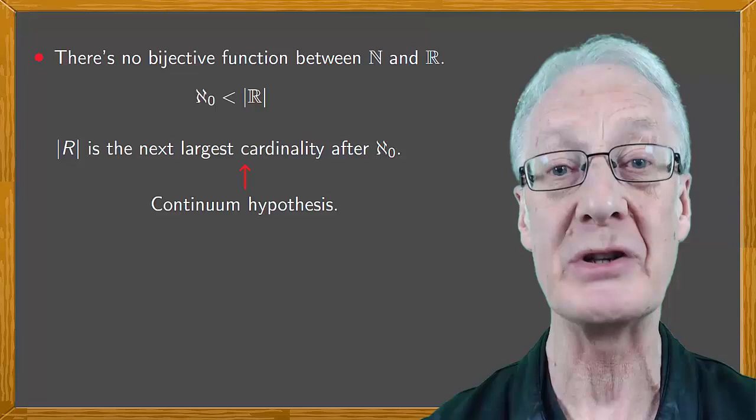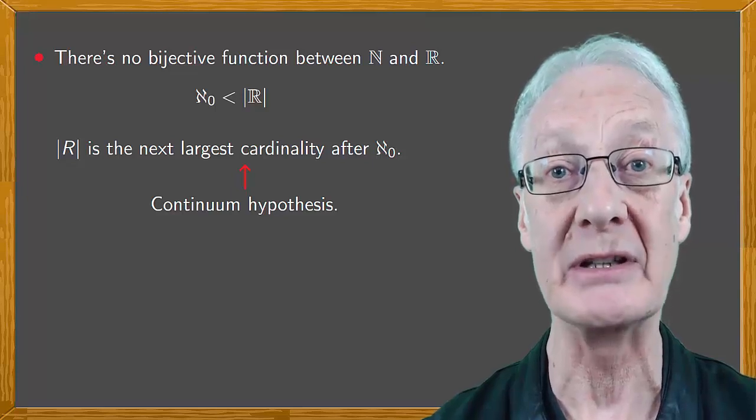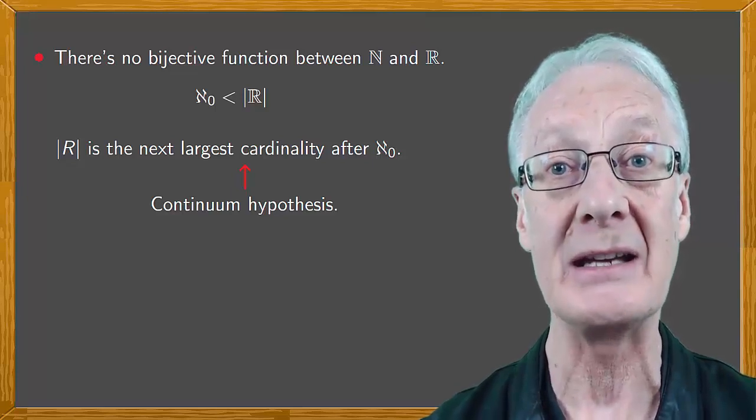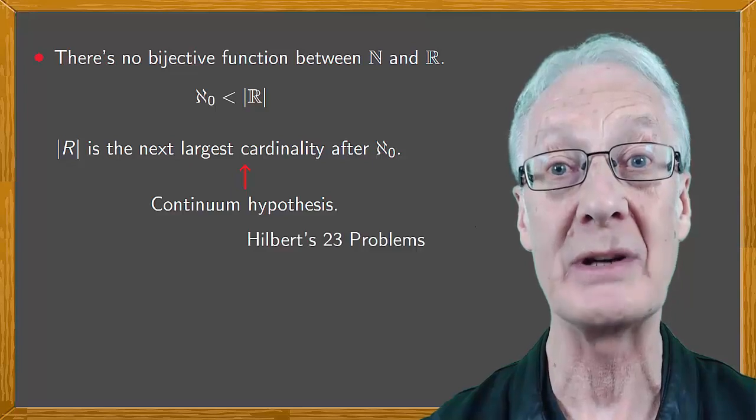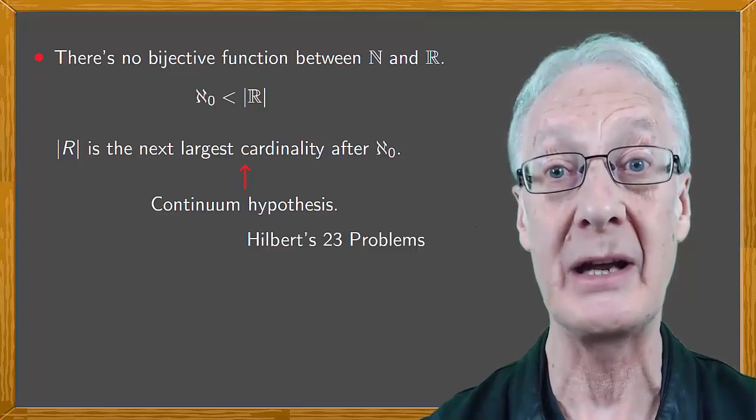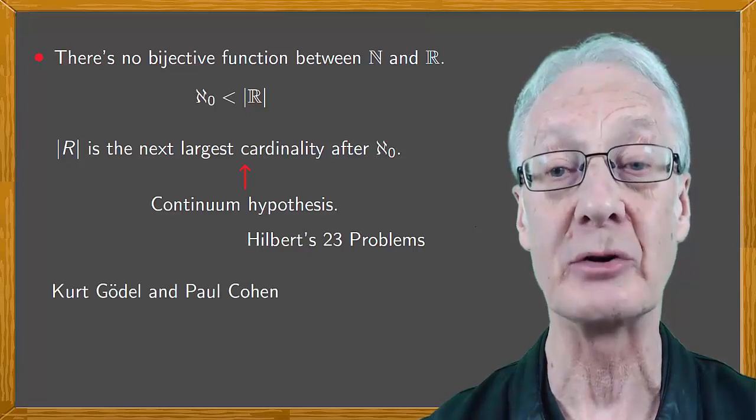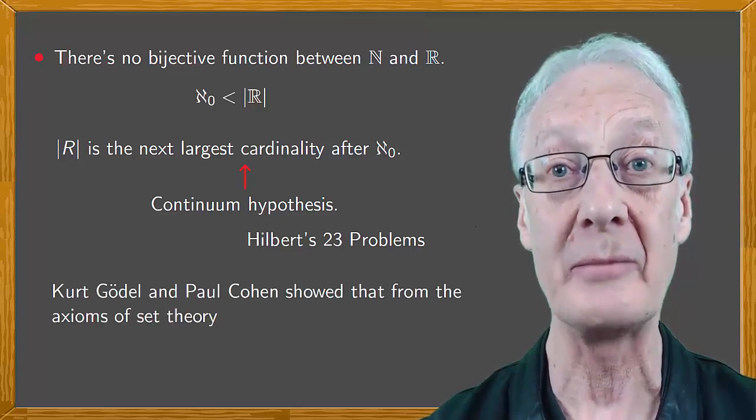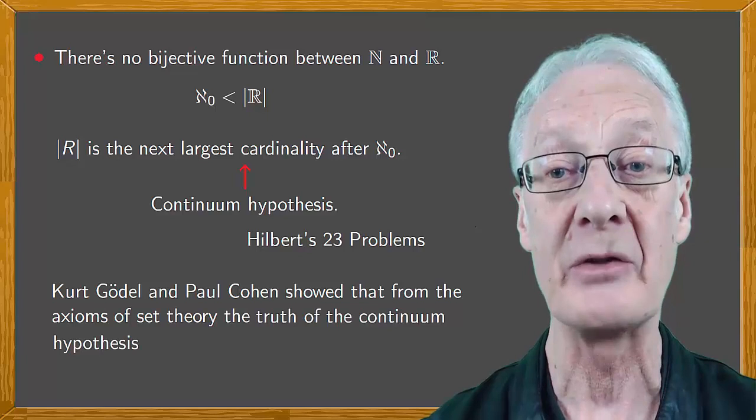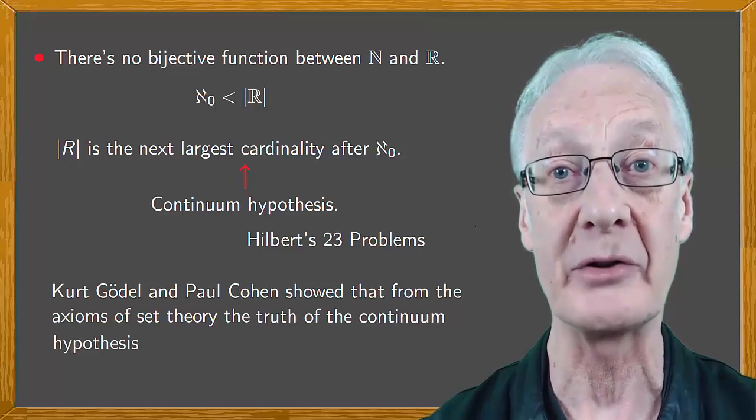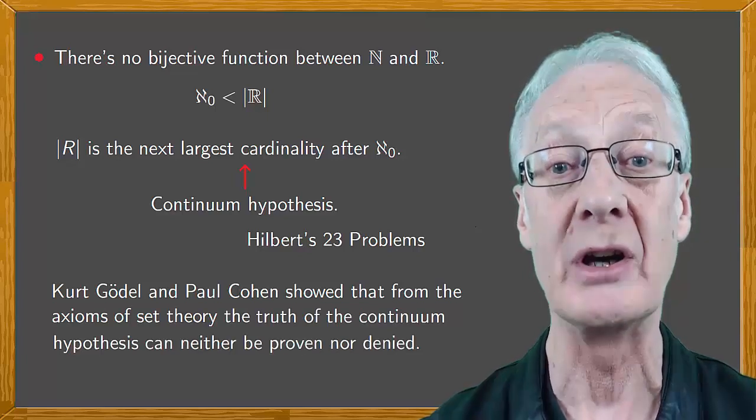The great German mathematician David Hilbert included the continuum hypothesis in his famous list of 23 unsolved problems in 1900. Later mathematicians Kurt Gödel and Paul Cohen showed that from the axioms of set theory, the truth of the continuum hypothesis can neither be proven nor denied.